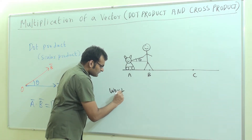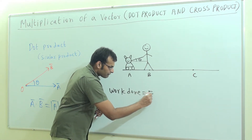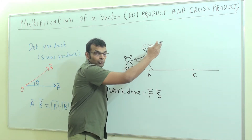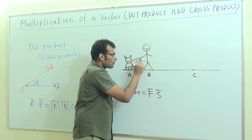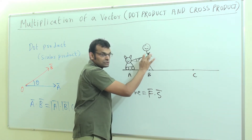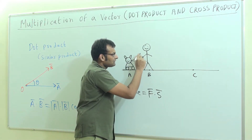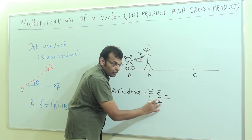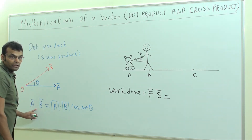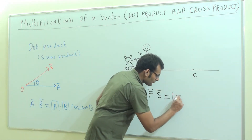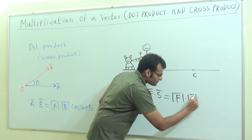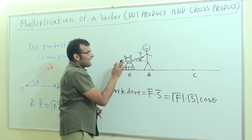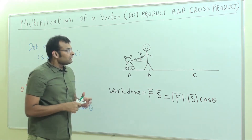Work done is given by F bar dot S bar. F bar is the force with which the boy is pulling the toy, and this force is making an angle theta with the horizontal. S bar is the displacement. So F bar dot S bar is the formula, and the resultant is magnitude of F bar into magnitude of S bar into cosine of the angle between the displacement vector and force vector. This is the basic theory behind the dot product.